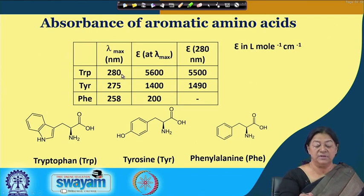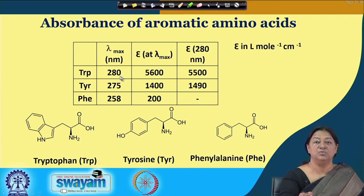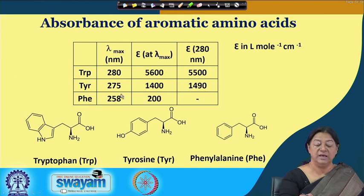We also have different lambda max values — the wavelength at which we have maximum absorbance for tryptophan, tyrosine, and phenylalanine.